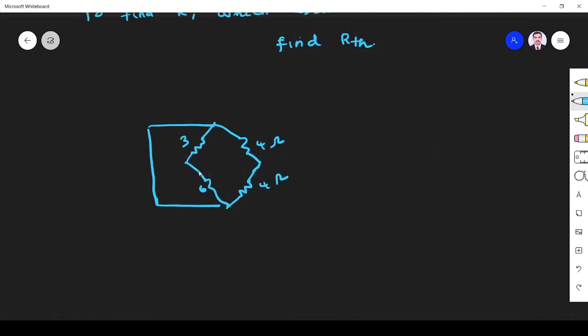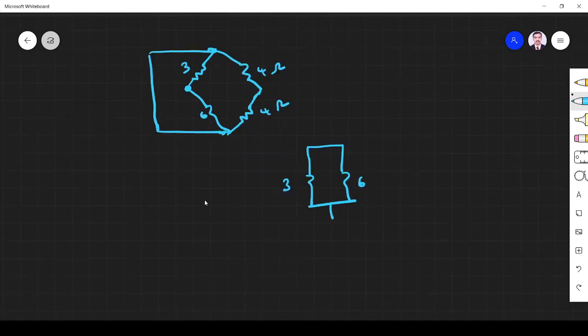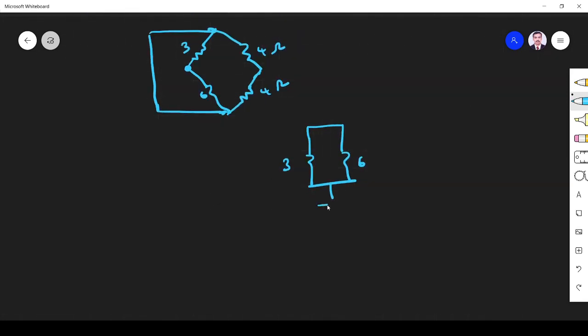Which is nothing but 3 and 6 in parallel connection. You see this end is connected here, these two ends are connected. Similarly 4 and 4 are connected, so 4 and 4 are parallel.